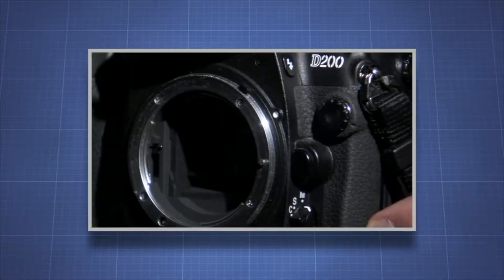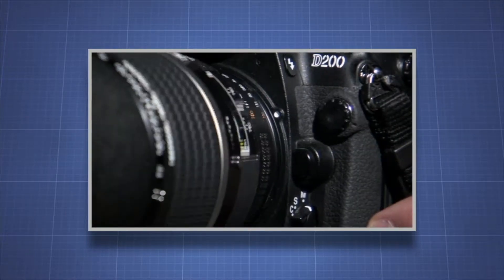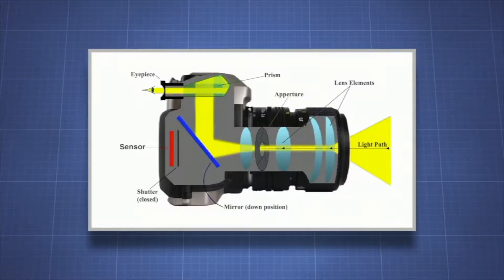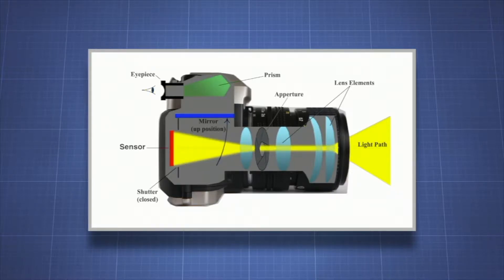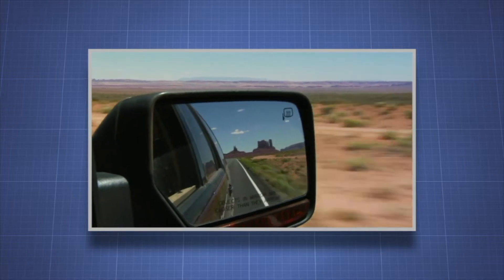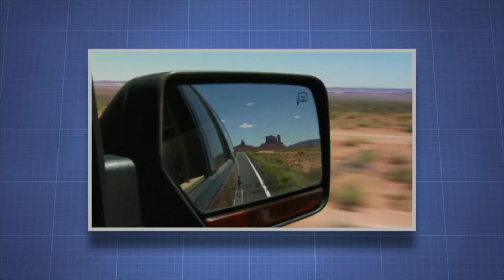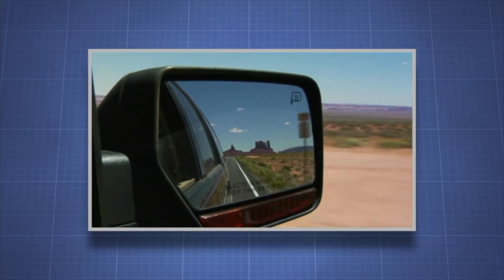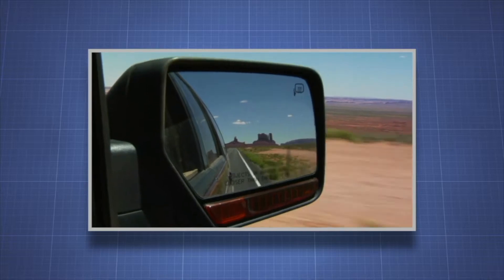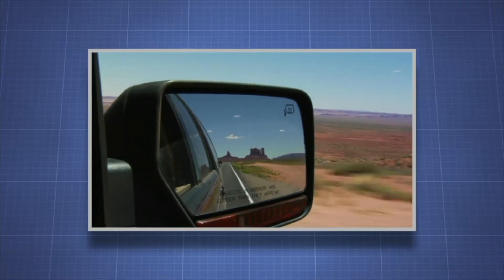For example, a plane mirror is a key component in a reflex camera. The mirror directs light to the viewfinder, allowing the photographer to see the subject accurately. Mirrors are also vital safety features. In a car, your rearview mirror allows the driver to see what's behind the car as it moves.